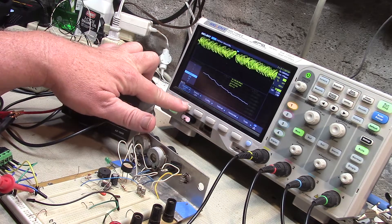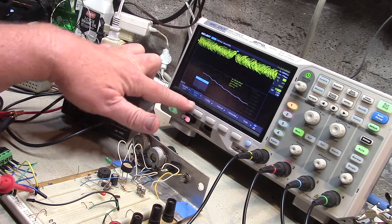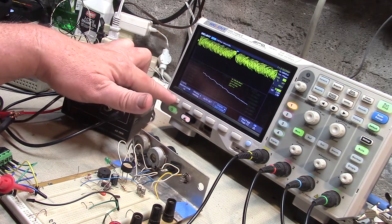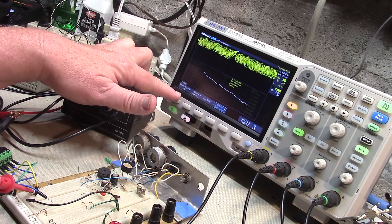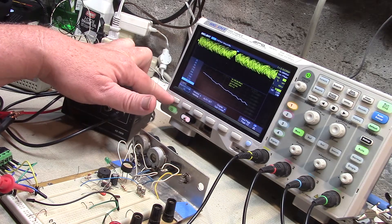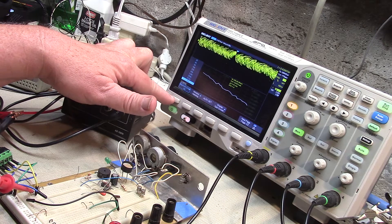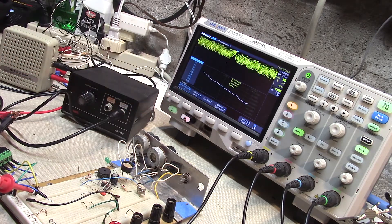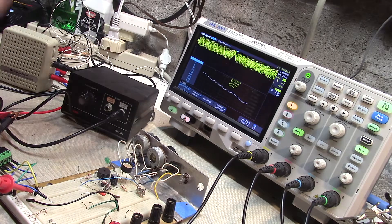And then you pick the source, and then you can configure what kind of FFT, how many points. Points tells you your frequency resolution, it's the inverse, the record length versus frequency resolution.